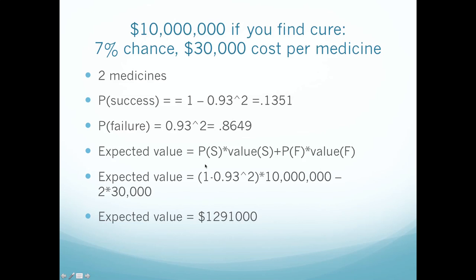So 13%, or 0.1351, we'll find a cure; 86%, or 0.8649, is the probability we won't find a cure. The expected value is the probability we get to $10 million: (1 minus 0.93 squared) times $10 million. And then we have to pay for the two medicines, so we subtract two medicines from our expected value. There's a chance you win the money and find the cure, but you certainly pay for the medicine either way. That comes to $1,291,000 — better than with one medicine.